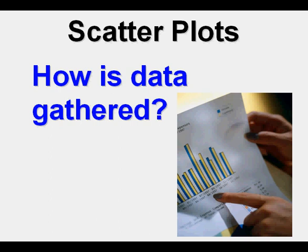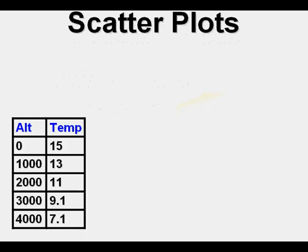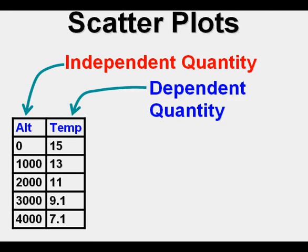This data can be assembled in tabular form like shown here. We have a relationship between altitude and temperature. Altitude is the independent quantity and temperature is the dependent quantity. Altitude is in feet and temperature is in degrees centigrade.